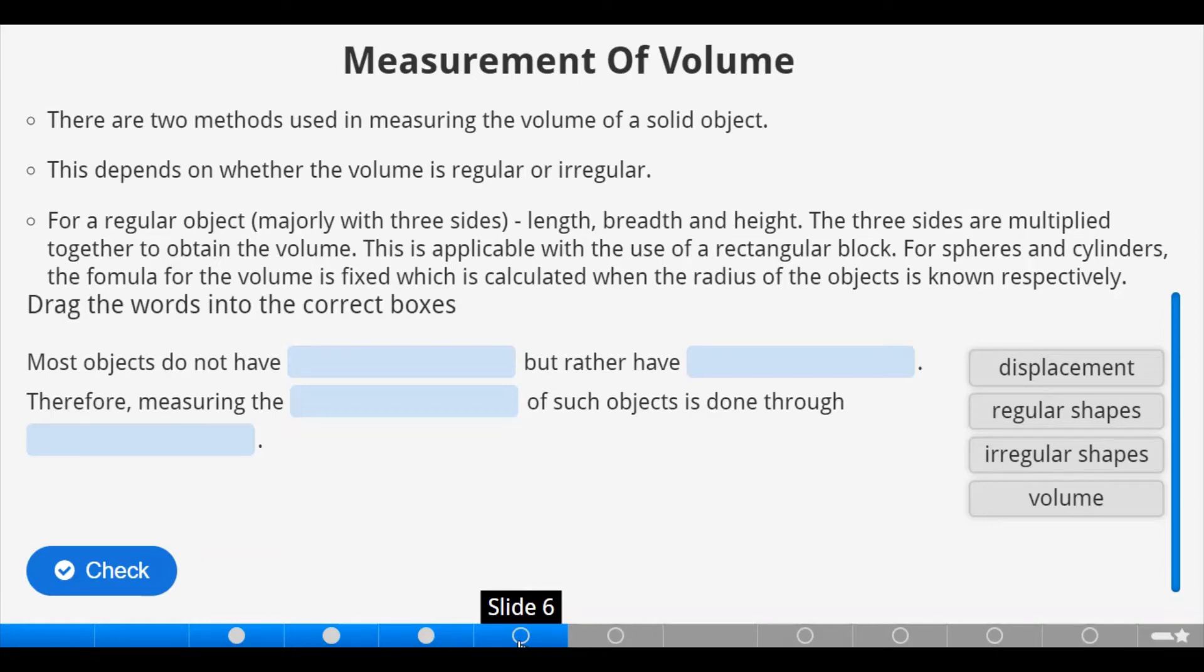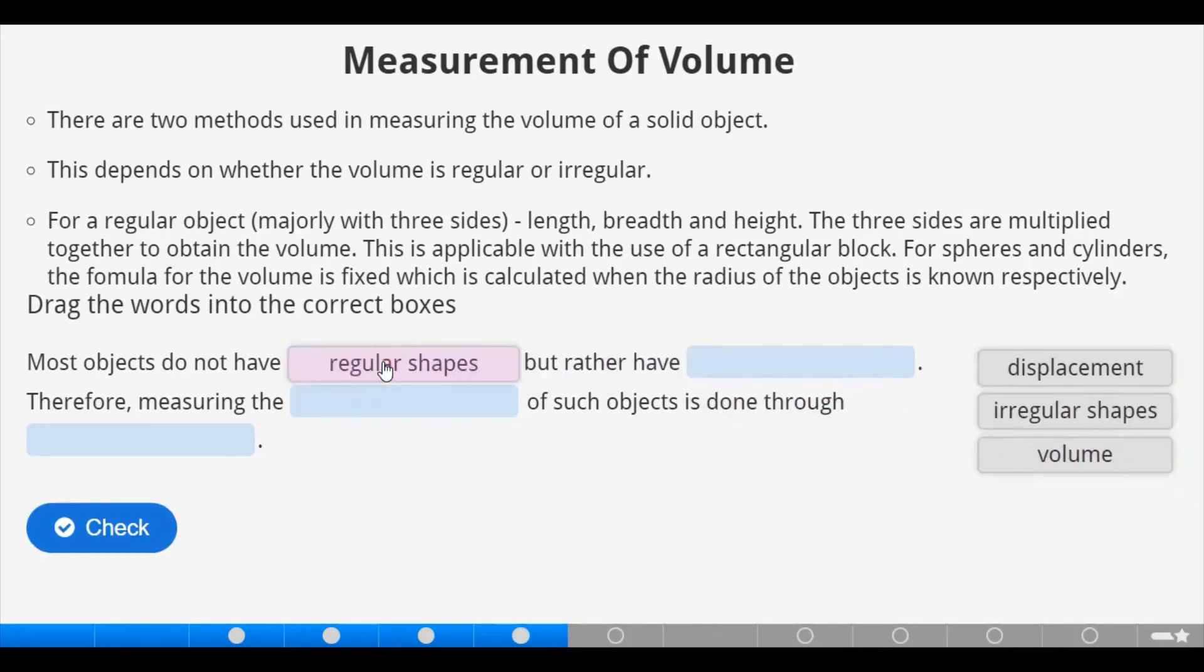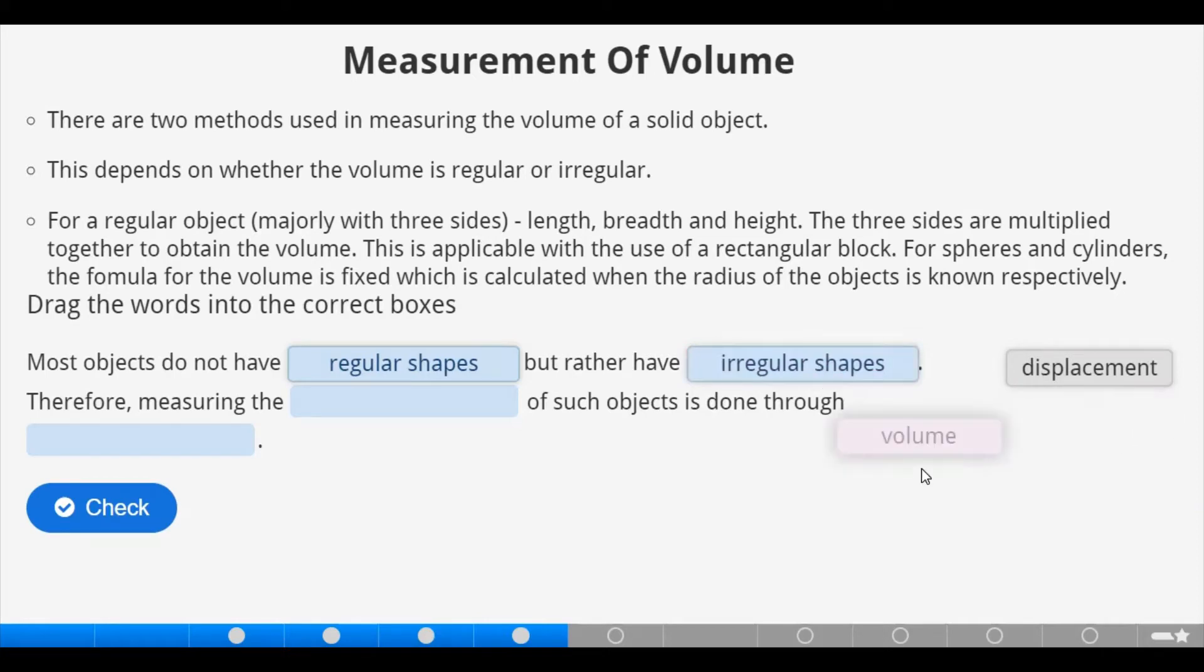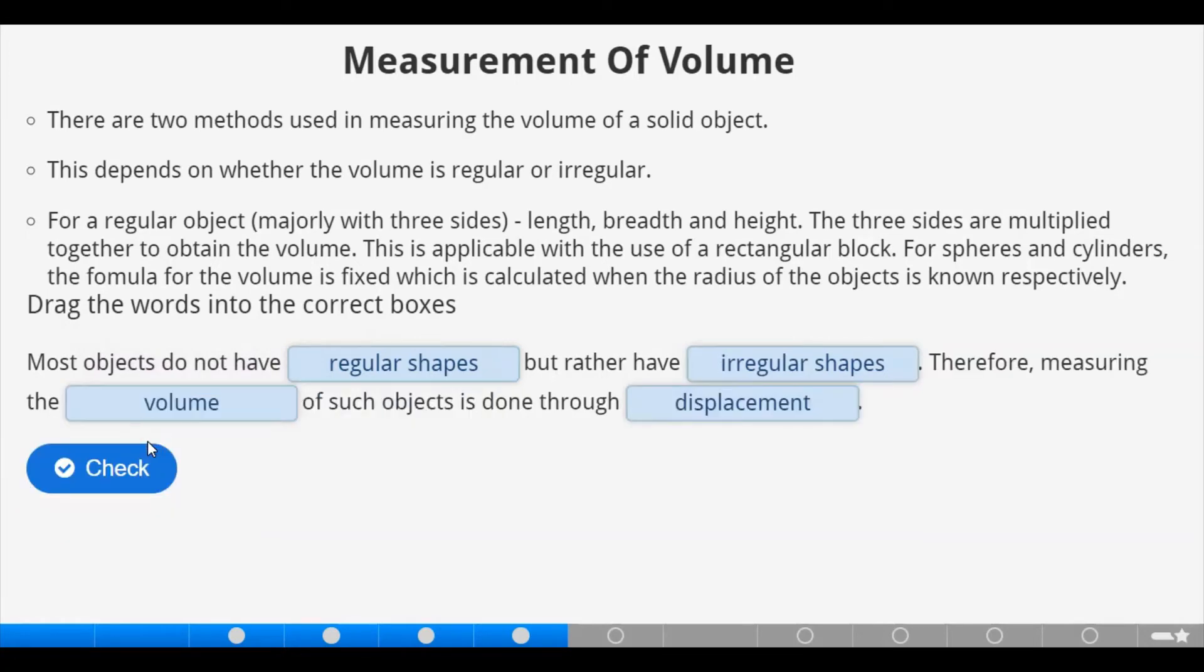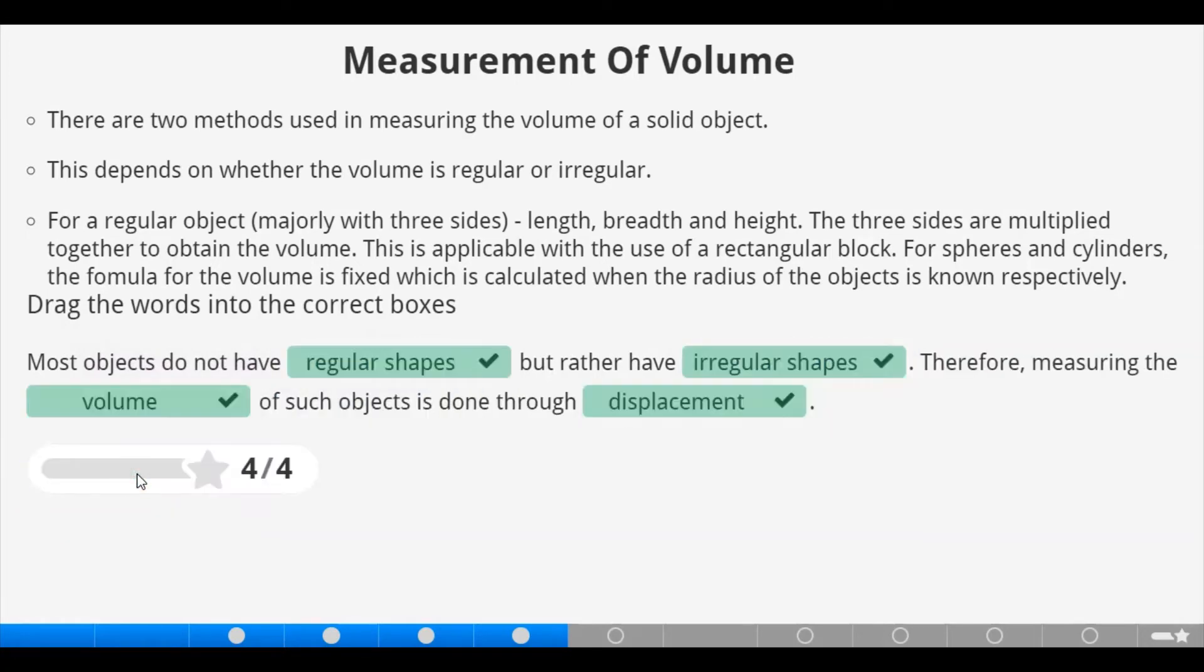Most objects do not have regular shapes, but rather have irregular shapes. Therefore, measuring the volume of some objects is done through displacement. So, we check. That is all correct. Let's move on to the next slide.